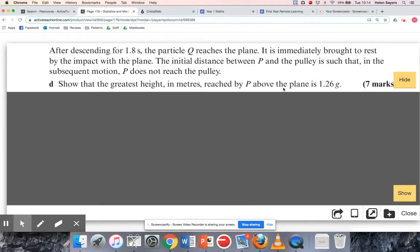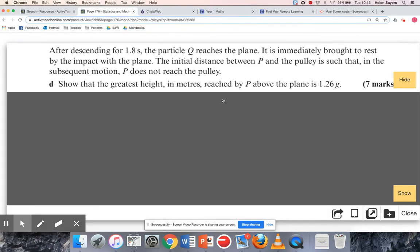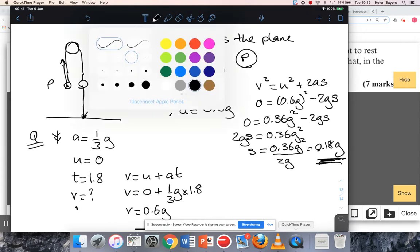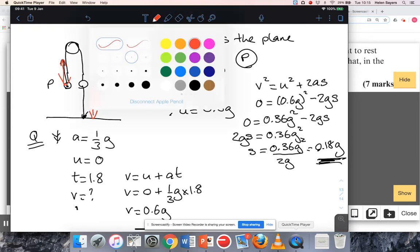So that is clearly not the answer they've given me there, but that's because they didn't ask me how far P travels upwards after Q hits the ground, which is what that distance is. I do need that distance, but they want the greatest height of P. It's quite nice that they've made it a 'show that' question because I can clearly see I haven't got the final answer just yet.